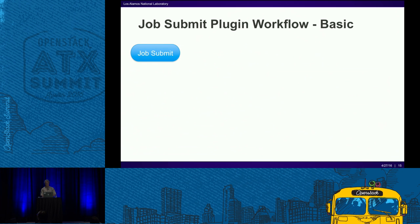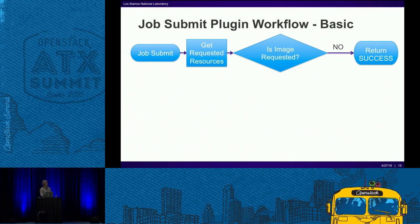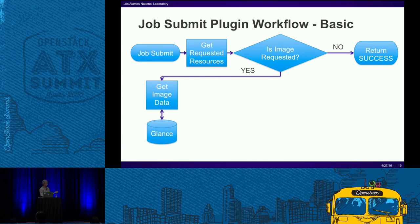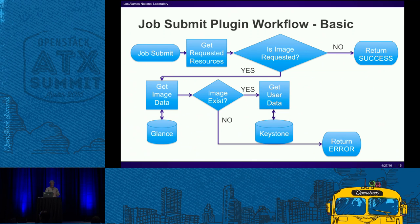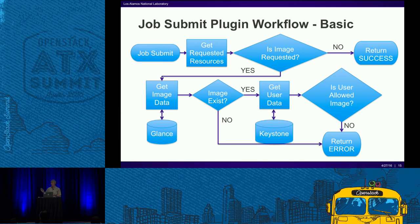What does the job submit workflow look like? The plugin looks at the batch script and asks: does the user even request an image? No? We're done — since every job gets routed through the plugin, it's important to have a quick shortcut out. If a user does request something, the plugin gets the image data out of Glance. Does the image even exist? We don't want a user to submit their job with a typo in the image name and only discover it after the job's been queued for two weeks. If the image doesn't exist, we return an error. If it does exist, we grab the user data out of Keystone and decide whether the user is allowed to use this resource. If they're not, we're done. If they are, success.